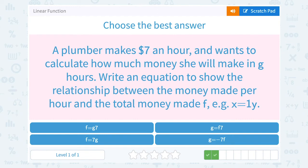A plumber makes $7 an hour and wants to calculate how much money she will make in G hours. Write an equation to show the relationship between the money made per hour and the total money made F.